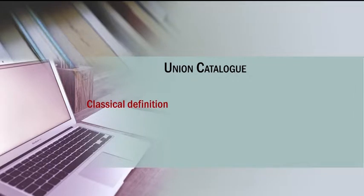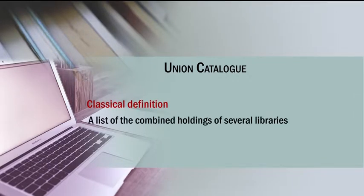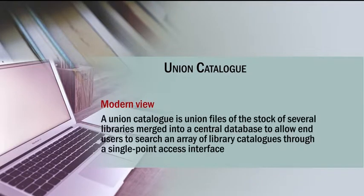By classical definition, a union catalog is a list of the combined holdings of several libraries. The modern view is that it is not only a list of holdings — a union catalog is a union of files of stocks of several libraries merged into a central database to allow end users to search an array of library catalogs through a single point access interface. A single point access interface is very important, and you cannot just use an ILS to act as a union catalog to handle many library datasets governed by many ILS systems.